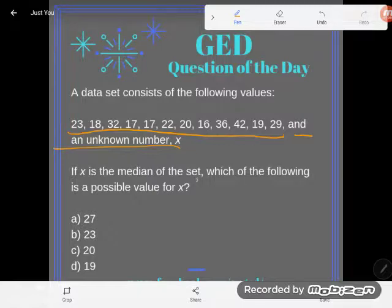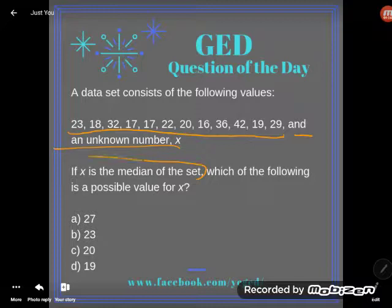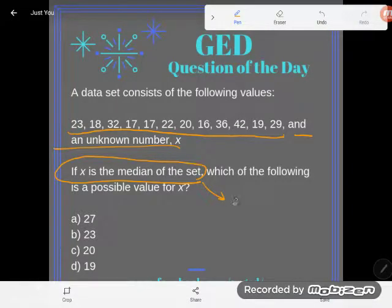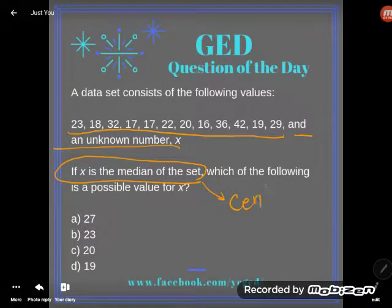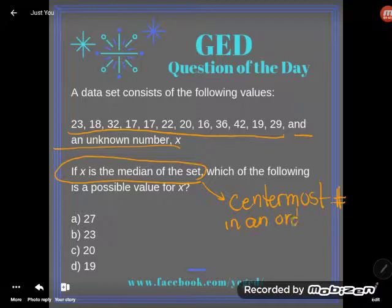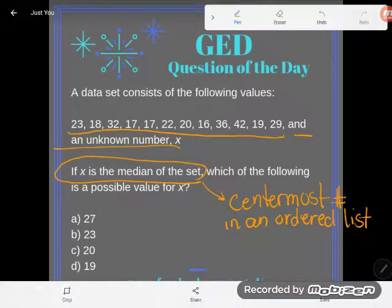So here's what we do know. We don't know what x is, but we do know something about x's placement — it says x is the median of the set. Remember what a median is: a median is the center-most number in an ordered list. So I think the first thing I'll do is go ahead and order my list, and then I'll figure out where x lies.